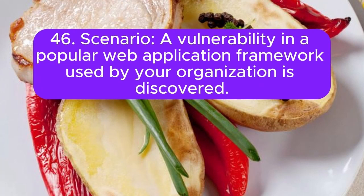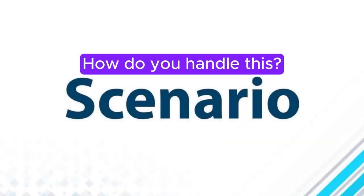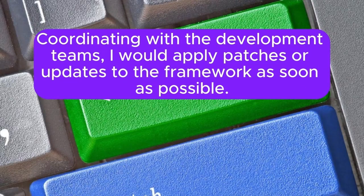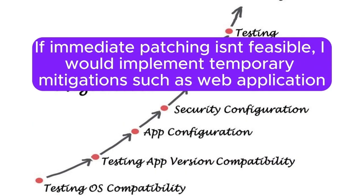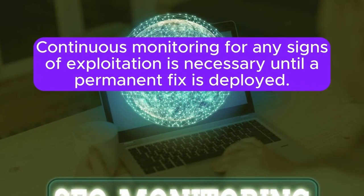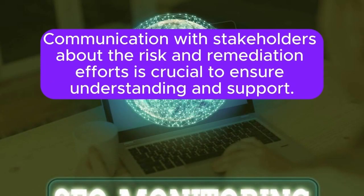Scenario 46: A vulnerability in a popular web application framework used by your organization is discovered. How do you handle this? I would identify all applications using the affected framework and assess the impact of the vulnerability. Coordinating with the development teams, I would apply patches or updates to the framework as soon as possible. If immediate patching isn't feasible, I would implement temporary mitigations such as web application firewalls. Continuous monitoring for any signs of exploitation is necessary until a permanent fix is deployed. Communication with stakeholders about the risk and remediation efforts is crucial to ensure understanding and support.